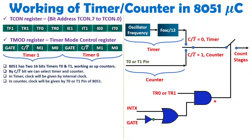Once TR is set to 1, the AND gate requires its other input to also be 1. There are two ways to achieve this: without using the gate signal, or with the gate signal. In the first case, the gate bit inside T-Mode register is kept at logic 0. After an inverter, this becomes logic 1, making the AND gate output 1 regardless of the INTX signal, and the count starts.